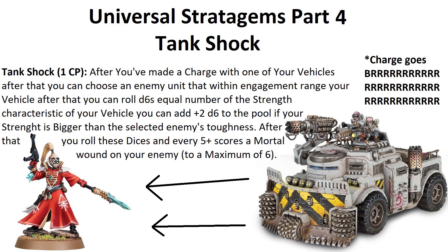Tank Shock: use this after one of your vehicles makes a charge move. Select one enemy unit in engagement range, then roll a number of d6s equal to the vehicle's melee weapon strength characteristic. If your strength is greater than the enemy's toughness, add 2 extra d6s. On each 5+, that enemy unit suffers 1 mortal wound — with a maximum of 6 mortal wounds per use.